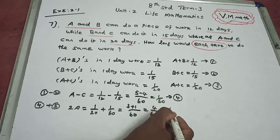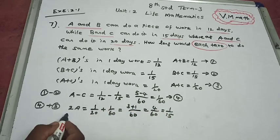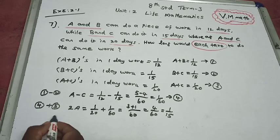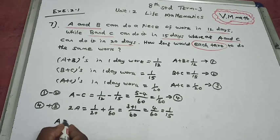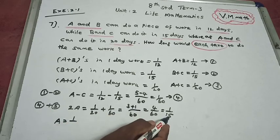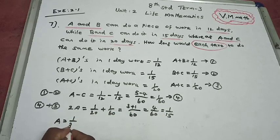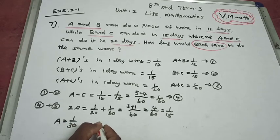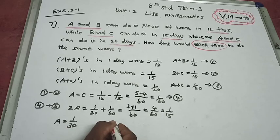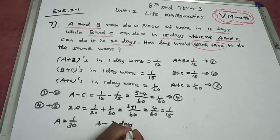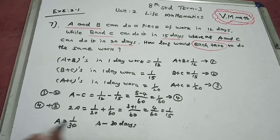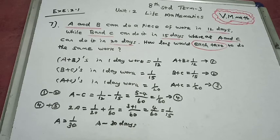So 2A equals 4 by 60. Dividing by 2, the reciprocal gives A equal to 1 by 30. Therefore A equals 30 days to complete the work.